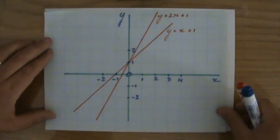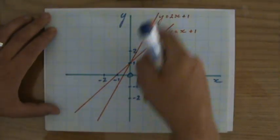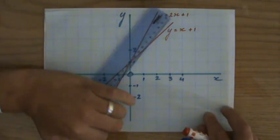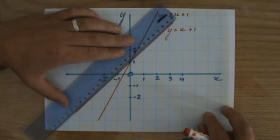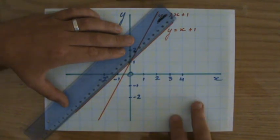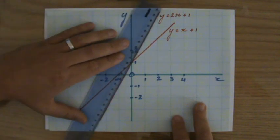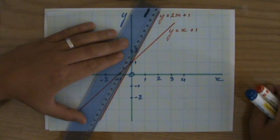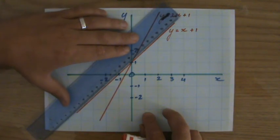I have prepared a set of axes and two lines. And line one, I'll just put my ruler here. That's this line. That's the equation y equals x plus 1. And line two has the equation y equals 2x plus 1. Now, first of all, we're going to look at line one.